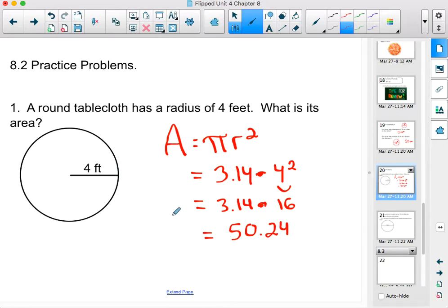Now, remember, this is area, and area is measured in square units. Area is when we try to figure out how many squares fit inside a shape, so we have to remember to put square feet in our final answer. So, the area of that circle would be 50.24 square feet.